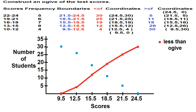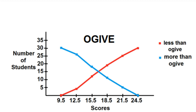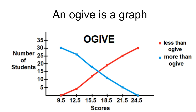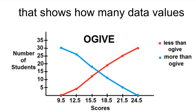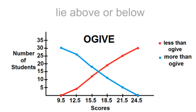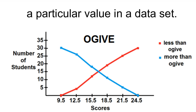Connect the points. An ogive is a graph that shows how many data values lie above or below a particular value in a data set.